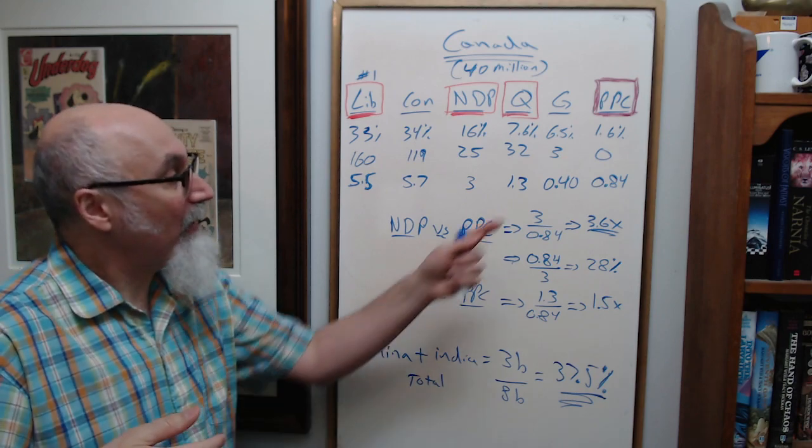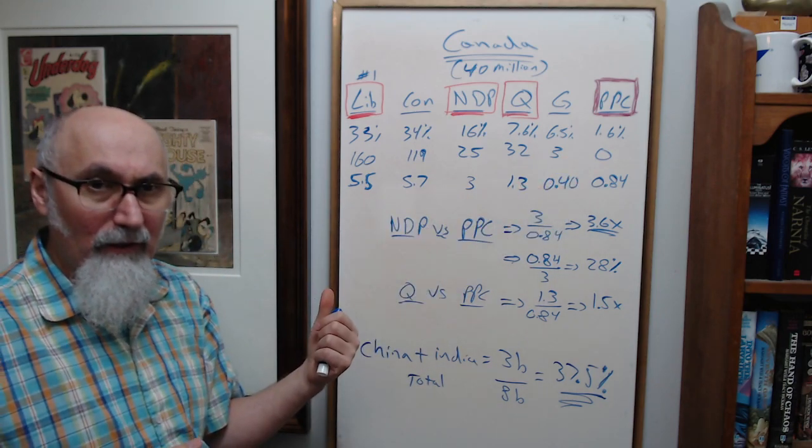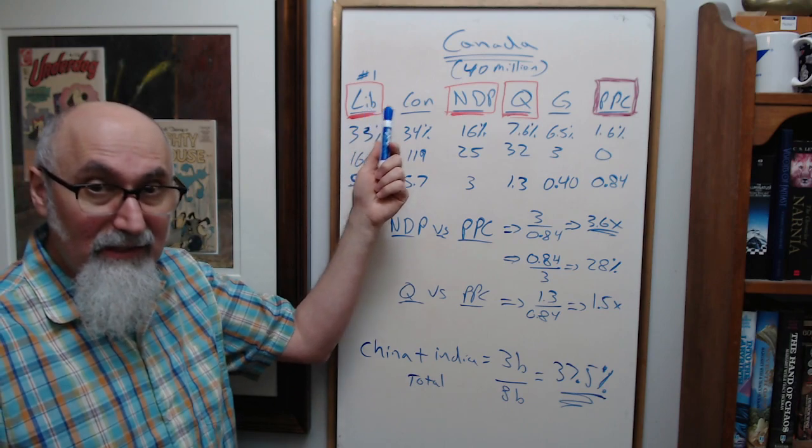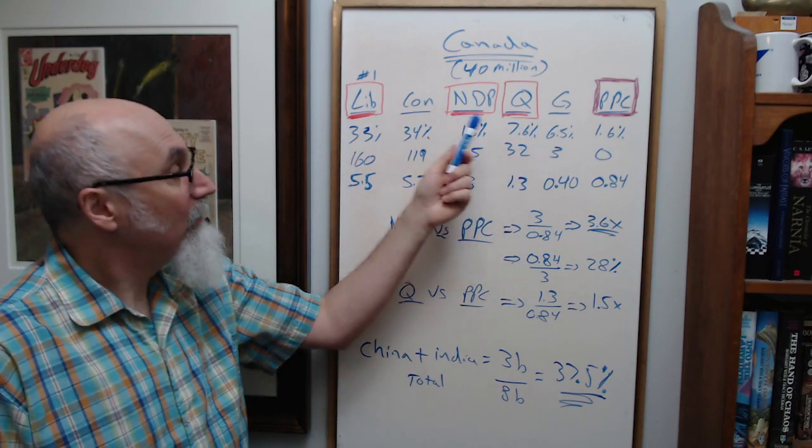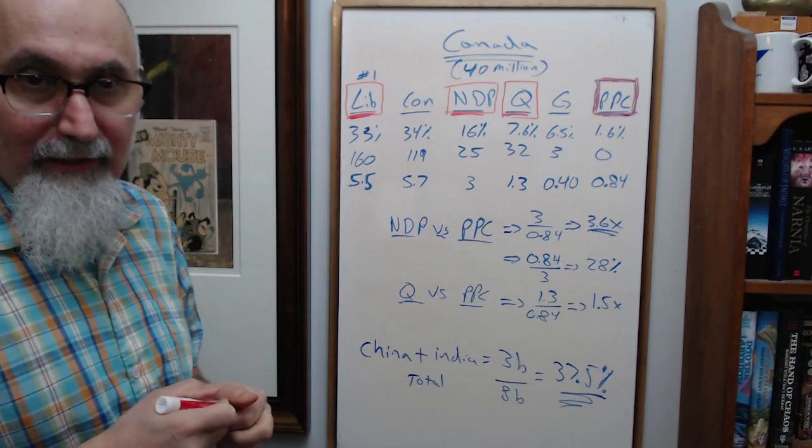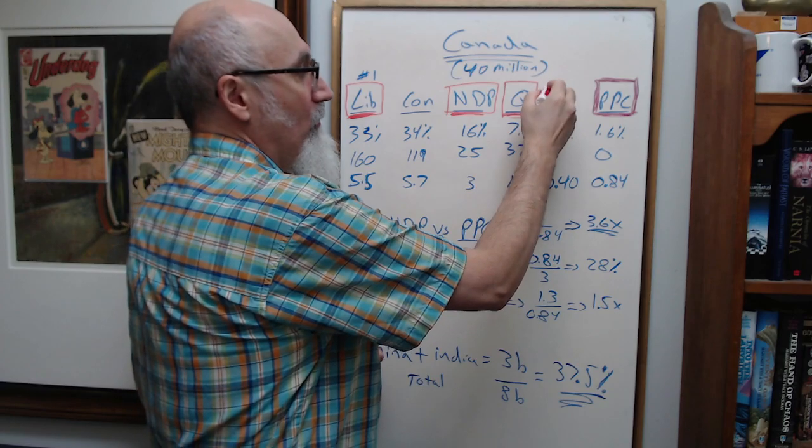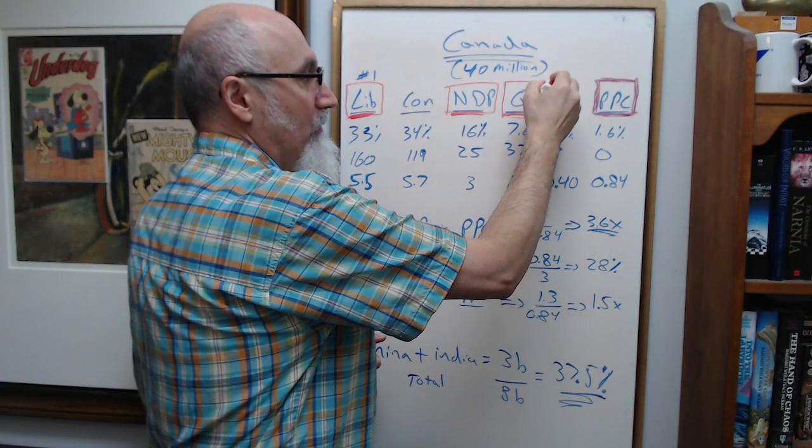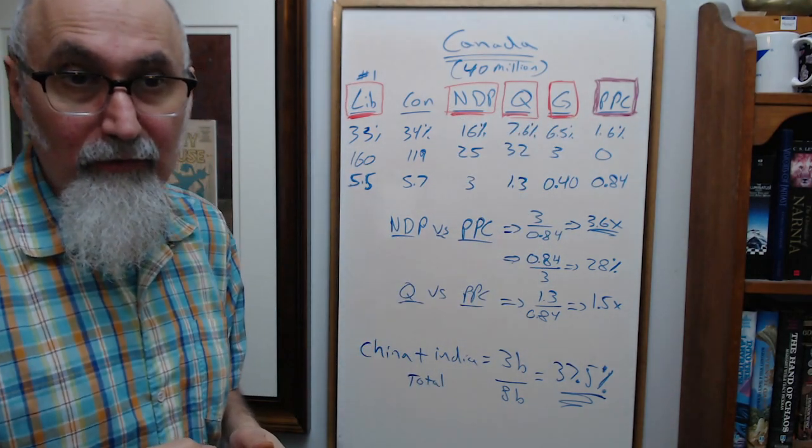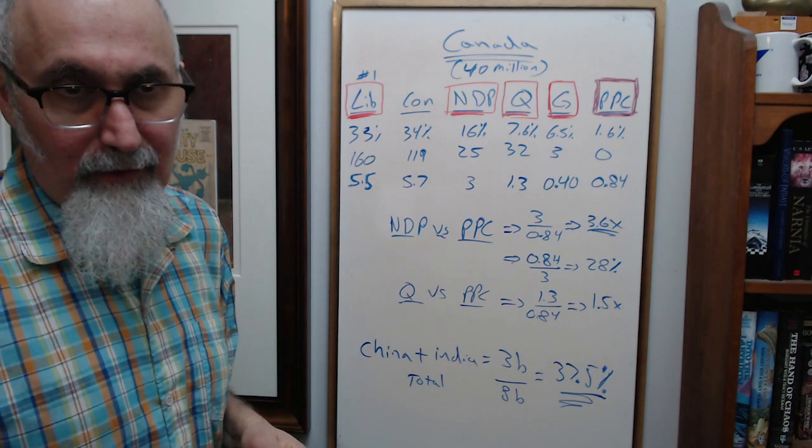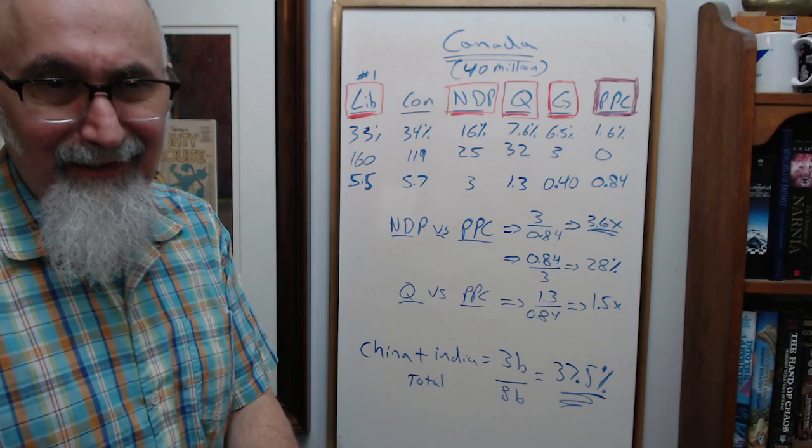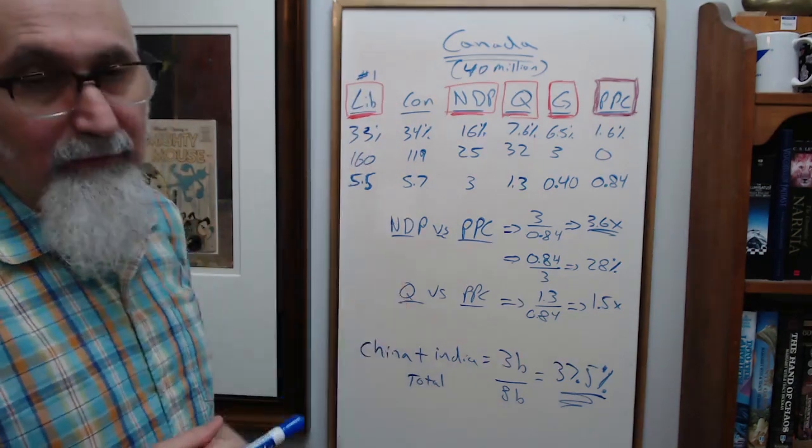There are rules in place in the United States to protect the minority from the majority, and there were rules in place to a certain degree in Canada as well. But these clowns, with the silence of these clowns, flushed that down the toilet. They even flushed down the Nuremberg code. Look into the Nuremberg code, and you'll understand what just happened in Canada.